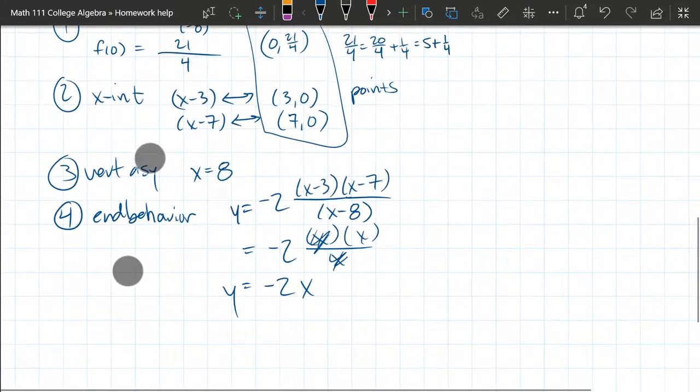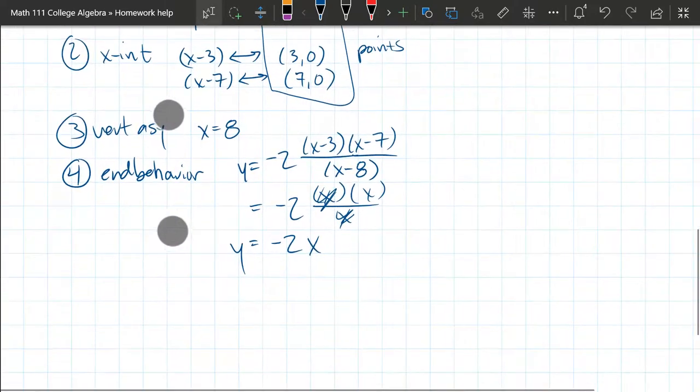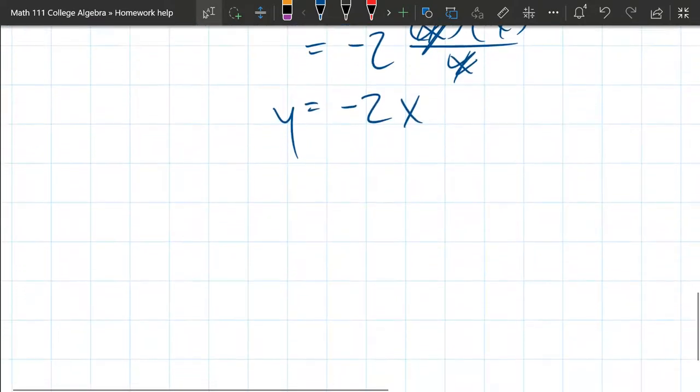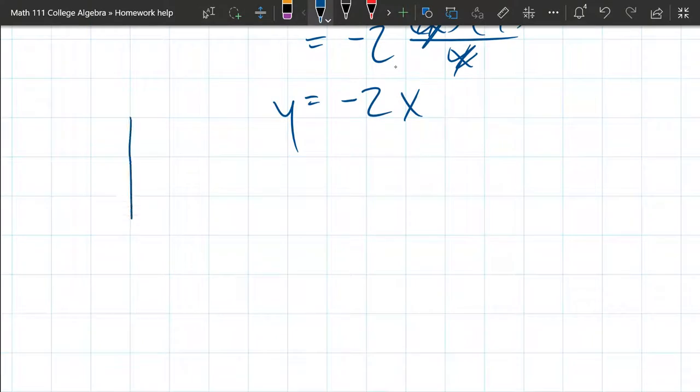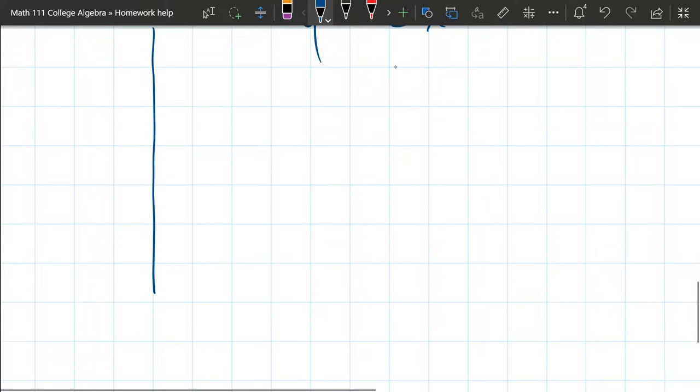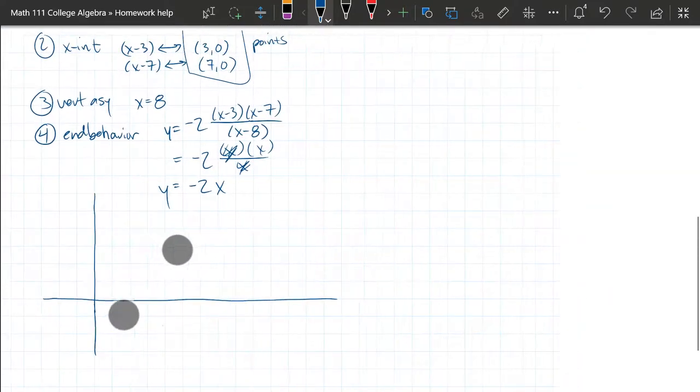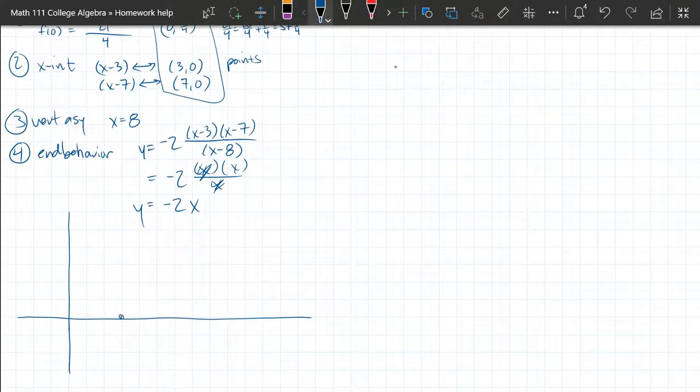I'm gonna need x-coordinates three, seven, and eight. All positive. So I'll zoom out a little bit to see everything. So there's three, seven, eight. It's a little different. It's a vertical asymptote, which is a vertical line.